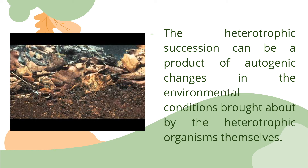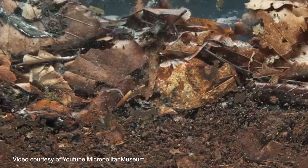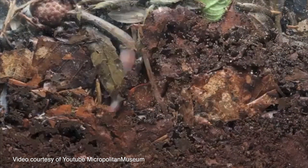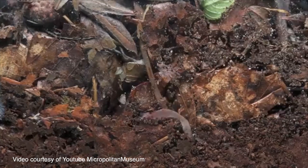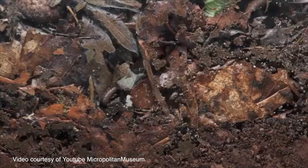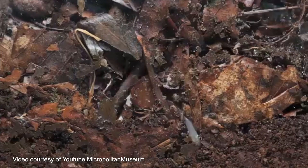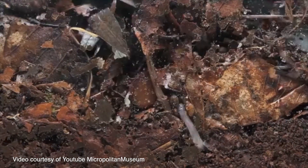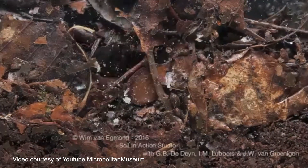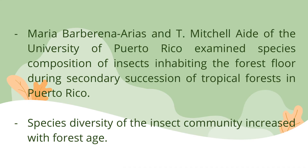Third, heterotrophic succession can be a product of autogenic changes in environmental conditions brought about by the heterotrophic organisms themselves. Maria Barberena Arias and Team Michelle Aid of the University of Puerto Rico examined species composition of insects inhabiting the forest floor during secondary succession of tropical forests in Puerto Rico. Species diversity of the insect community increased with forest age. The increase in species diversity of insects on the forest floor was associated with increased accumulation of leaf litter, providing a more complex array of habitats and resources.